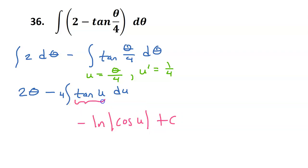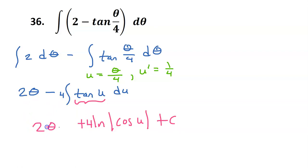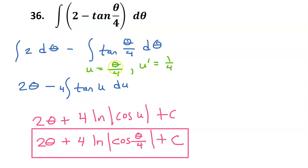However, we already had a negative, so this is going to make it into a positive. And don't forget the 4. Let's bring down our 2 theta which isn't going anywhere. Substituting theta over 4 back in for u, we have the final answer.